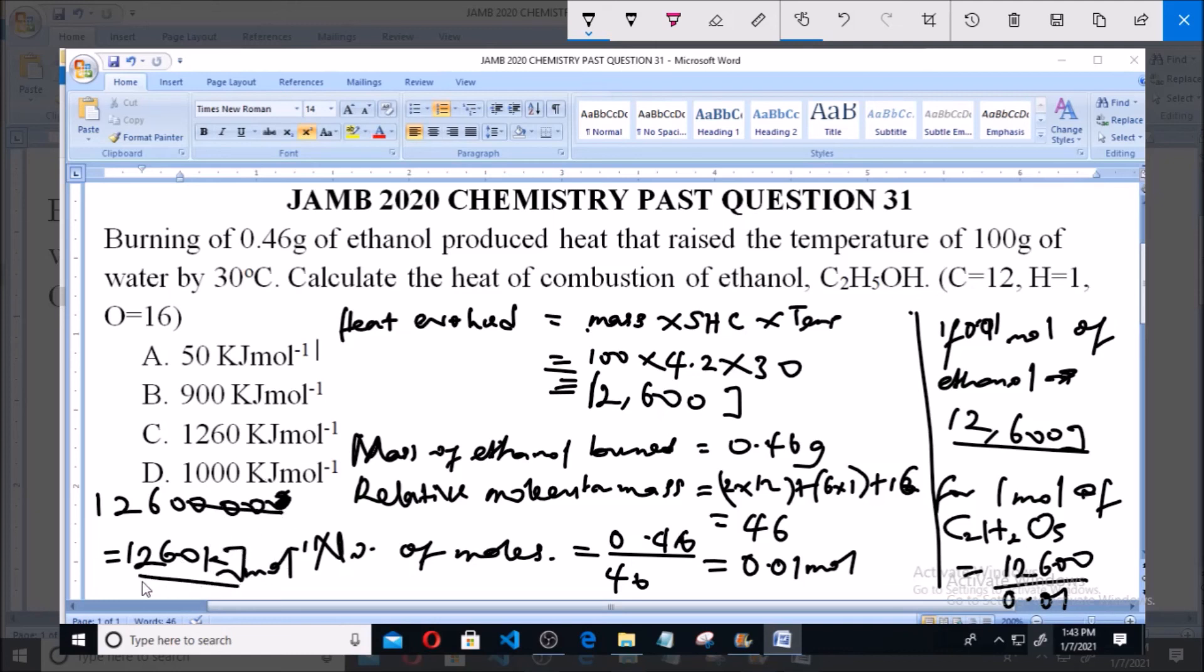This is the final answer. For 1 mole of ethanol, the heat of combustion is 1260 kilojoules per mole, and that is option C.